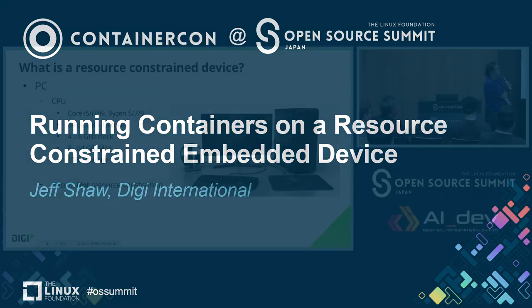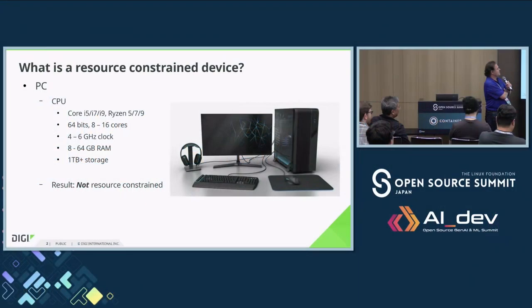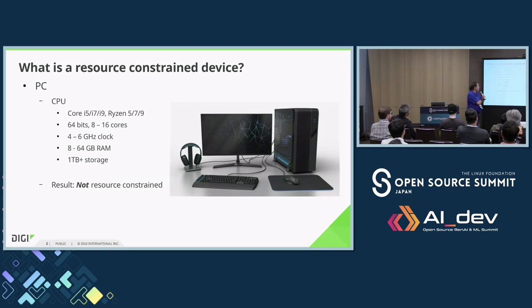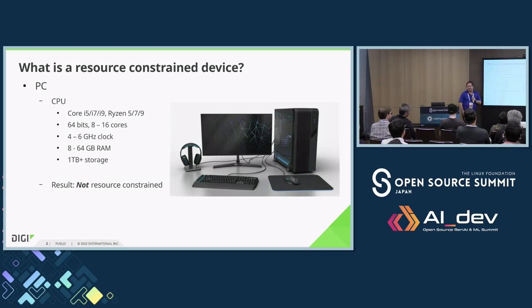Everyone has these things at home. Is this resource constrained? It's a PC. It's got 8 to 16 cores, 4 to 6 GHz clock, 64 gig of RAM, and I don't know how many terabytes of storage. Is this resource constrained? No. You can run whatever you want on there.